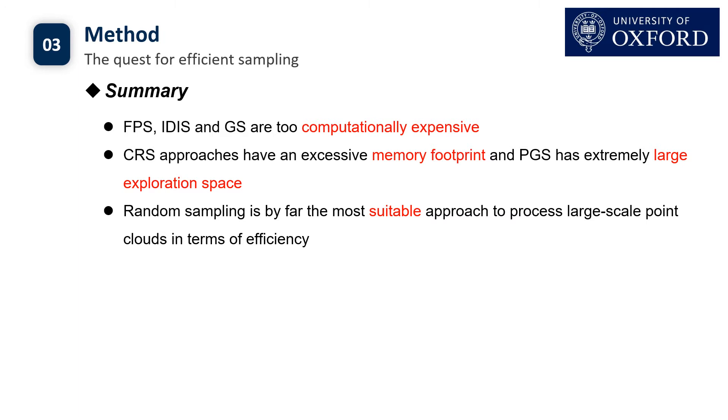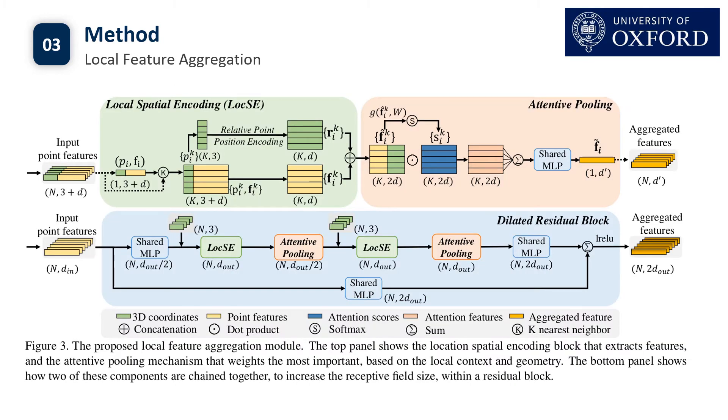However, random sampling may result in many point features being dropped. So the new question is, how to preserve these useful features? To this end, we propose a powerful local feature aggregation module to progressively increase the receptive field for each 3D point, so that geometric details are more likely to be preserved even if some points are dropped.